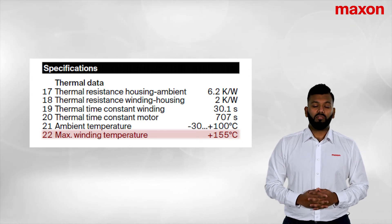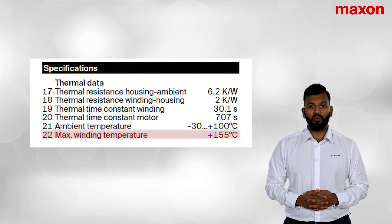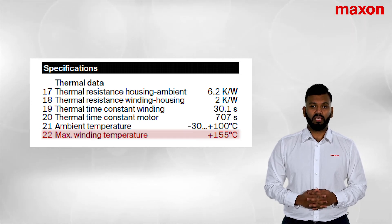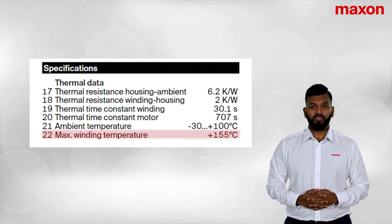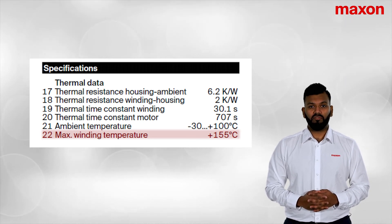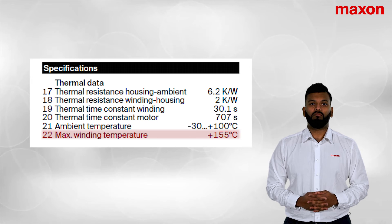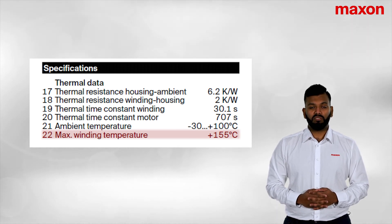Maxon DC brush motors and EC motors have a maximum winding temperature of 125 degrees, and in some cases up to 155 degrees. Precious metal brush motors are low current motors, and the maximum winding temperature for these is 85 degrees.